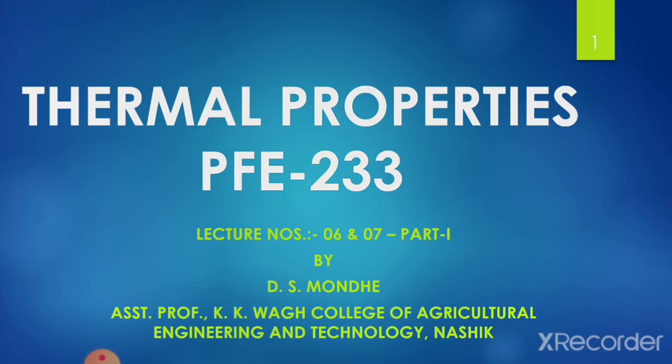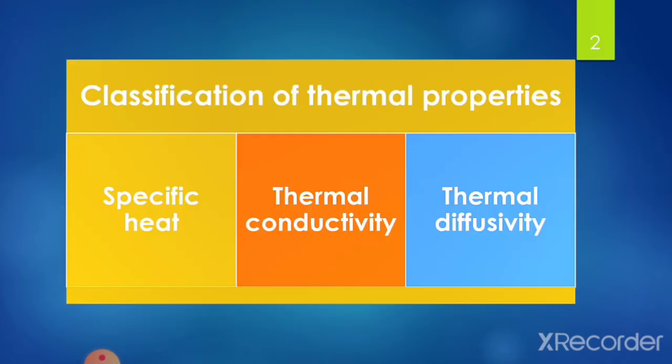This particular topic will be covered in four parts. Thermal properties of biological or agricultural produce are classified into three categories: specific heat, thermal conductivity, and thermal diffusivity.